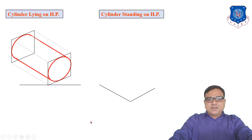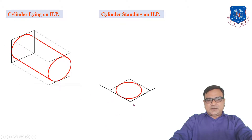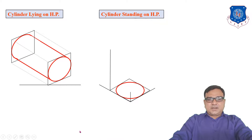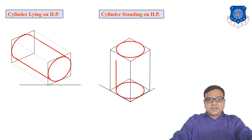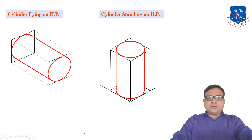Now for the standing cylinder: when the cylinder is resting on the HP with its axis perpendicular to the HP, draw two rhombuses using two 30 degree angles. Draw the ellipse using the rhombus or four-center method. Draw vertical lines representing the height of the cylinder, draw another rhombus and ellipse using the four-center method. Draw the generator lines of the cylinder and remove hidden parts for the final isometric drawing.